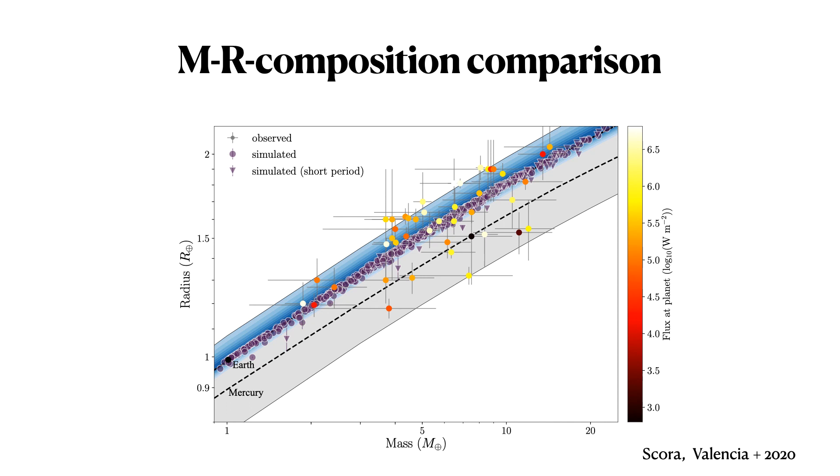So basically this region over here, we were not able to obtain. Even though we did see a spread in composition, it's not enough to explain super-Earth data. And that's our main conclusion for that study.